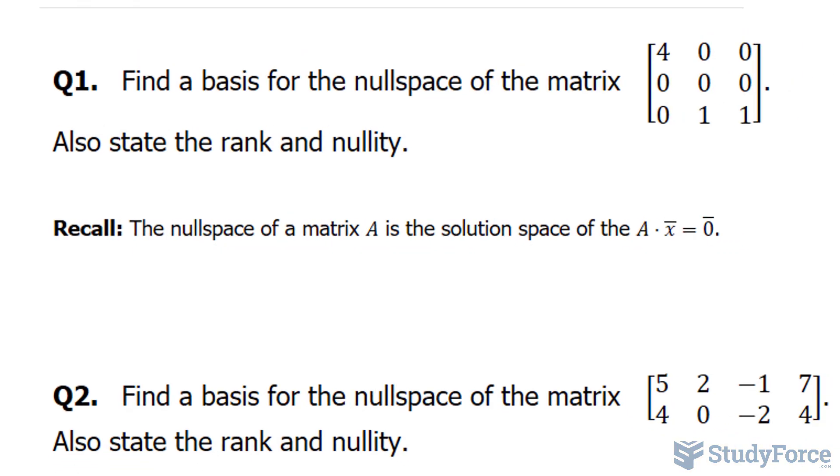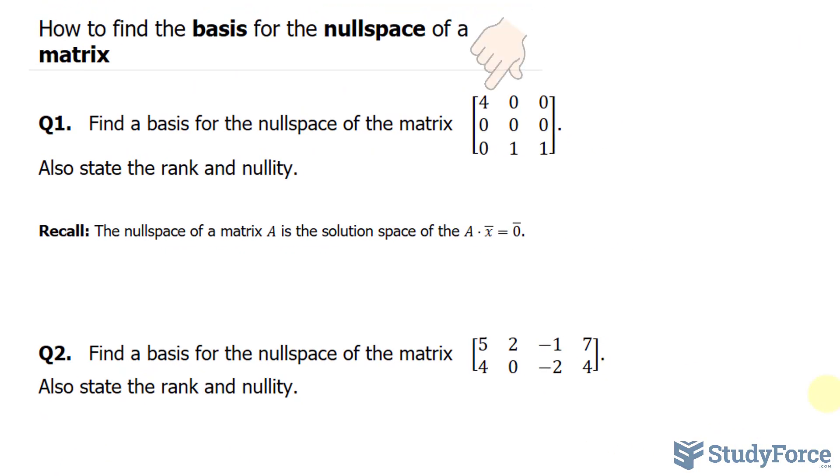In case that's confusing to you, take a look at how many columns we have: one, two, three. If we have three columns, we have to pretend that we're multiplying this to another matrix consisting of our variables that has three elements, x sub one through sub three. And this is equal to zero.